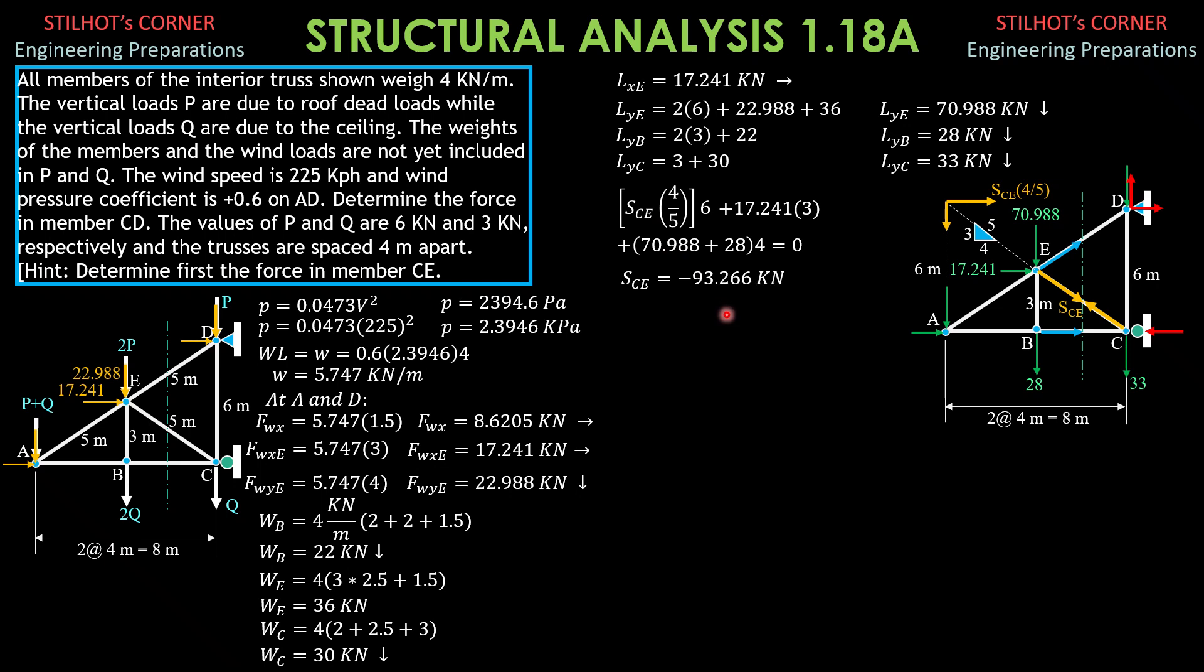So it is a compression member negative 93.266 kilonewtons, so finally we isolate joint C, draw the free body diagram of joint C, this is a roller support, so it is just a horizontal reaction, horizontal reaction, and if you sum up forces along Y at C, then these two unknown reactions and this force BC here will not be involved in that equation.